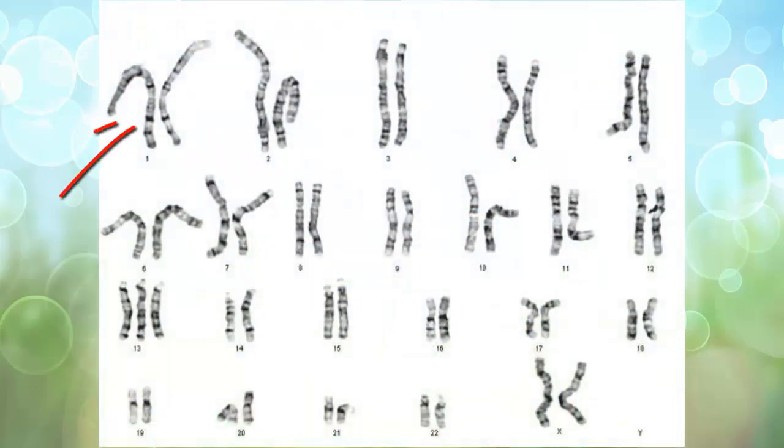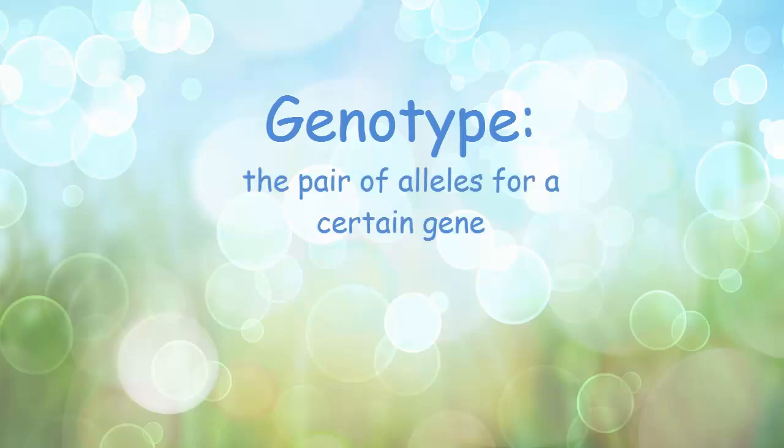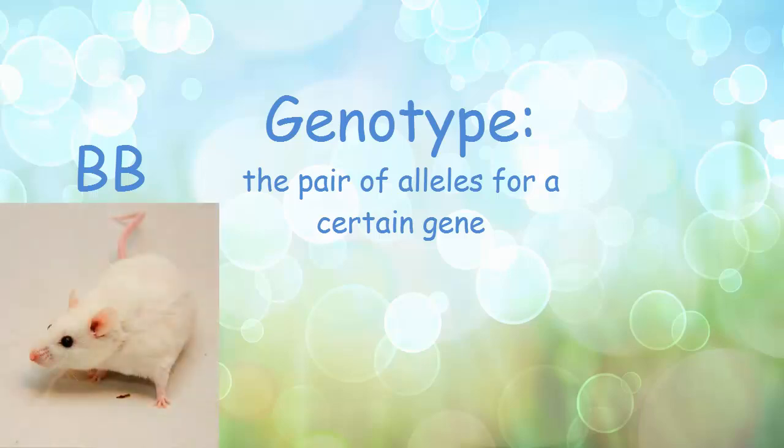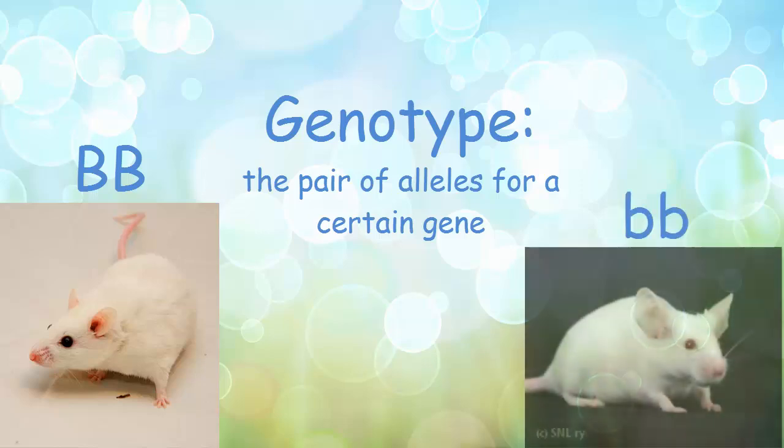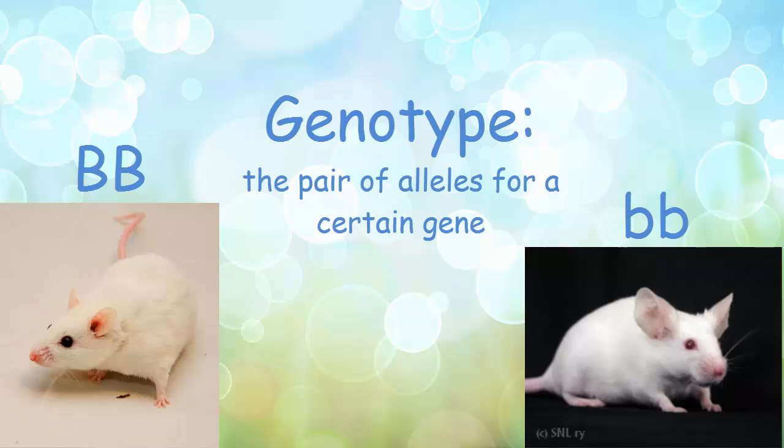Like I discussed before, you have your locations of your gene. So each chromosome here, each pair, has two alleles. Each chromosome has one, and then your pair has two. And so those two alleles together, that's what we call a genotype. A genotype is the pair of alleles for a certain gene. Going back to our mice, the genotype capital B, capital B, is for a black-eyed mouse, while the genotype little b, little b, is for a red-eyed mouse.